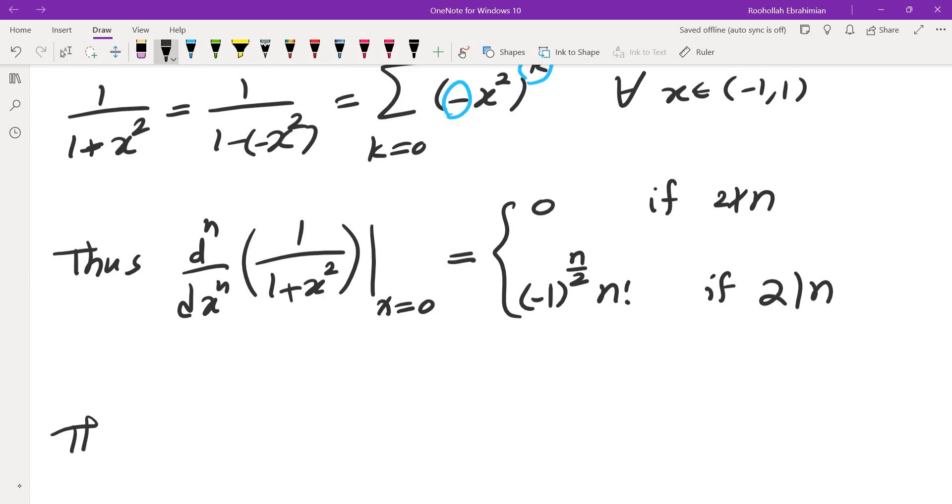So the nth derivative would be this, which means, therefore, nth derivative of f at 0 is going to be 0 if 2 doesn't divide n.